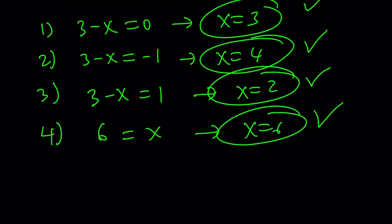So we got four solutions. The solution set consists of 2, 3, 4, and 6. Now, let's go ahead and take a look at the graph, and we'll kind of compare what we found with the graph.